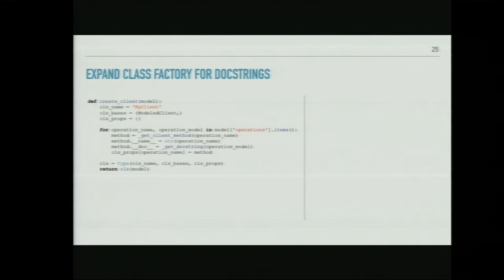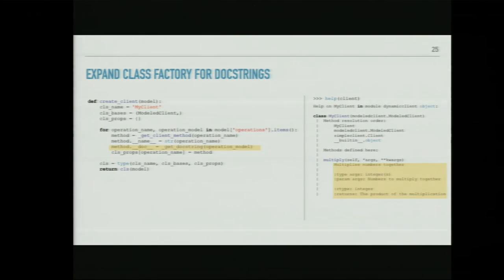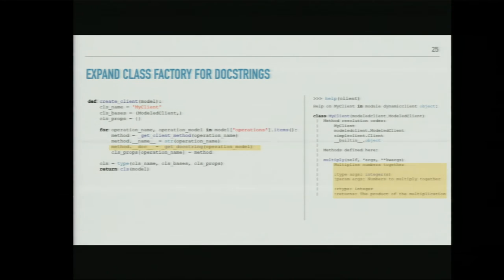There's one big issue: the docstrings are still not specific. If you call help on the client you'll see multiply is just a proxy to _api_call. To fix this, add two lines: set dunder name and dunder doc for the method in the class properties dictionary. Setting dunder name to the operation name string overrides the proxy appearance when you call help. Setting dunder doc runs get_doc_string, which takes the operation model and concatenates documentation, parameter types, and return types into a proper docstring.